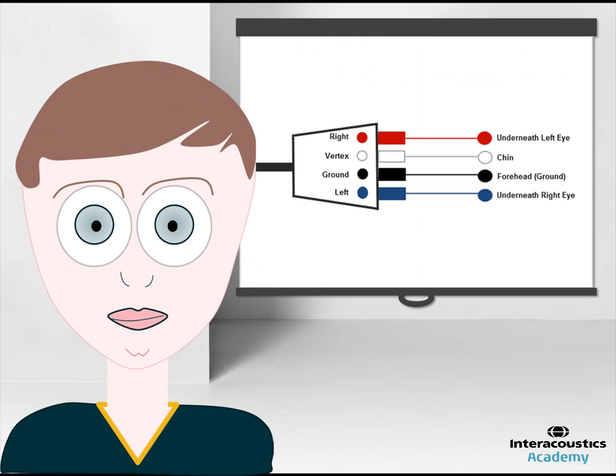Here is an overview of how the electrode should be positioned in order to obtain an OVEMP. The left blue reference electrode should be placed underneath the right eye while the left ear is being stimulated, and vice versa. The active electrode should be positioned on the chin and the ground on the forehead.